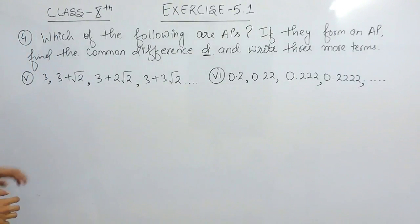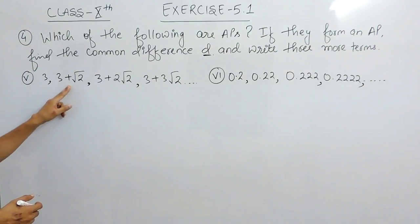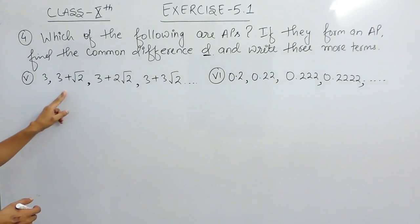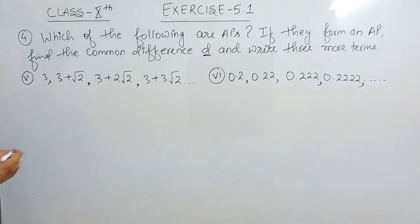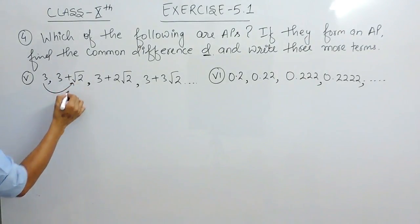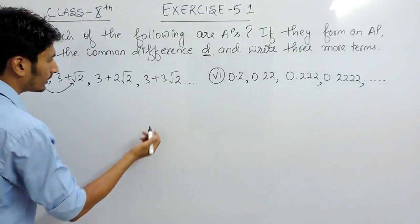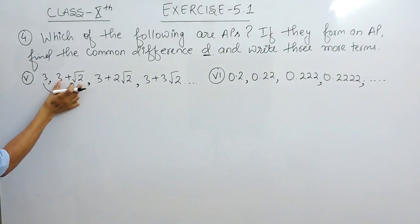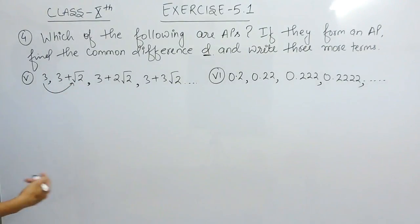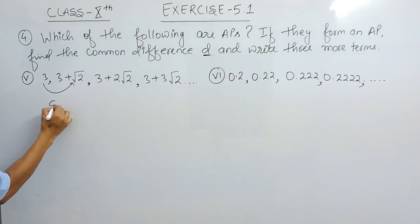Till now we know what APs are. For that you have to check whether we are adding a constant term all the times or not. For that you can subtract two consecutive terms to get that difference, which is known as the common difference.